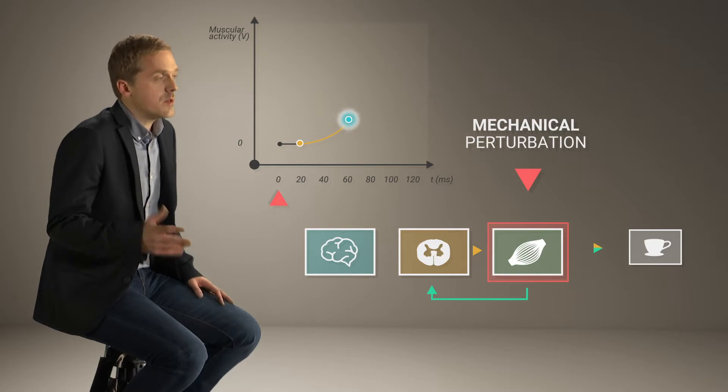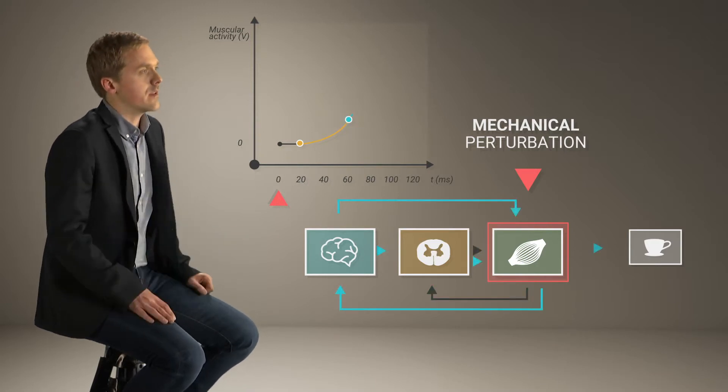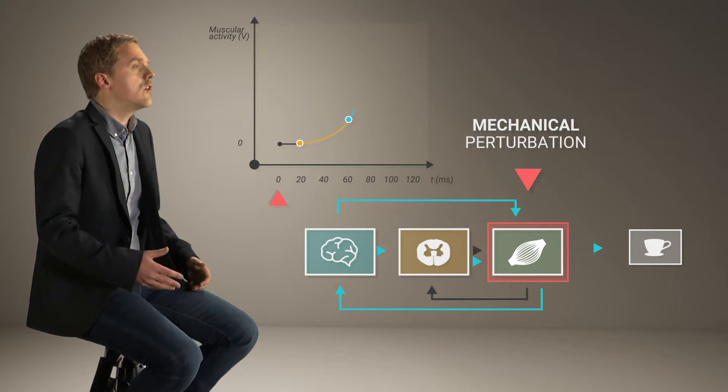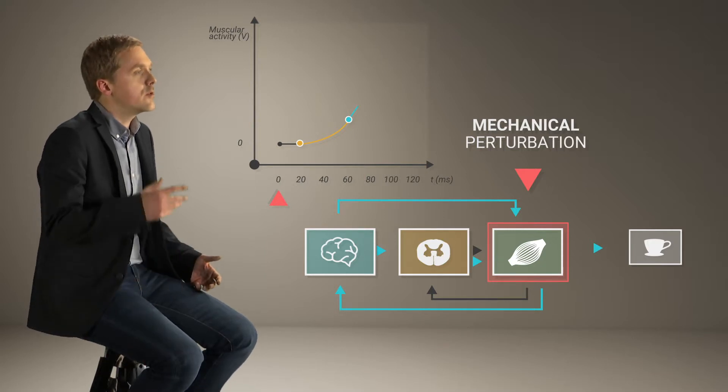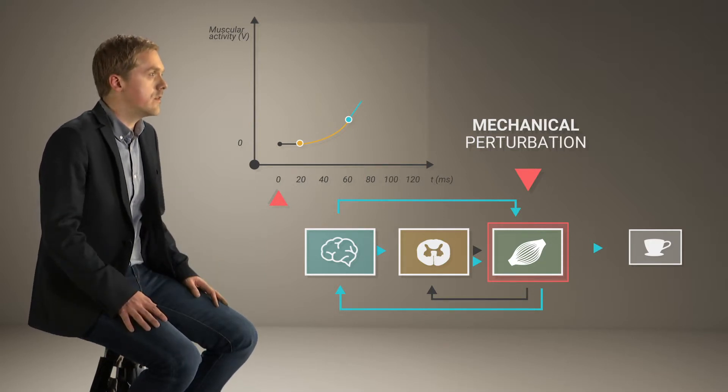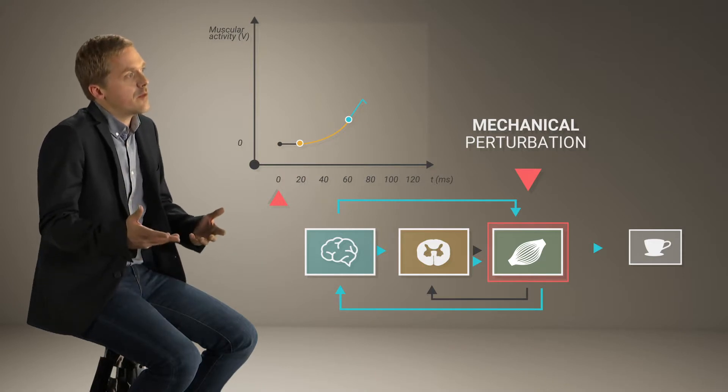At around 60 milliseconds, we start to see the influence of cortex. At this time, neural signals have traveled through a distributed network of brain regions and thus the muscle activity at this time reflects the contribution of these regions.